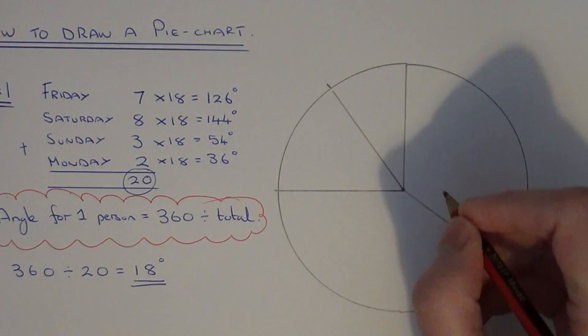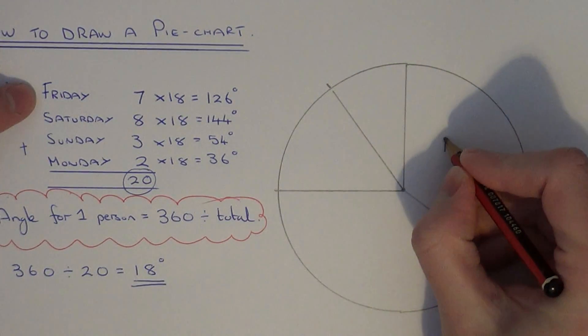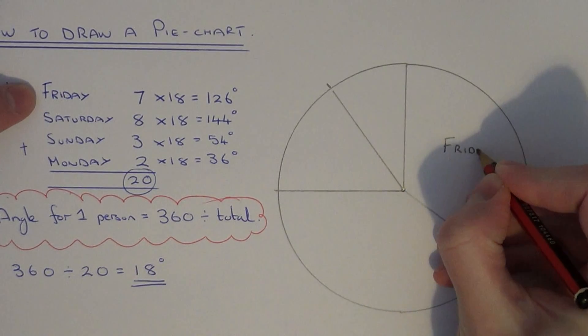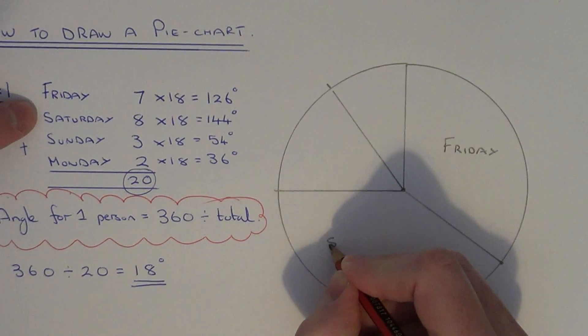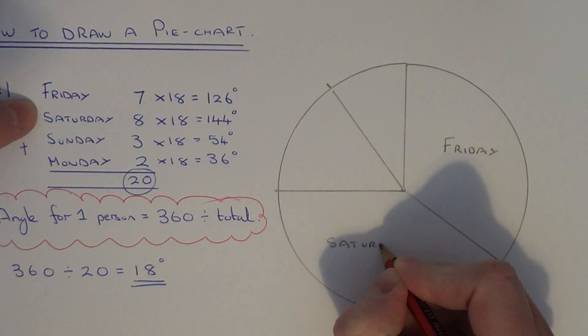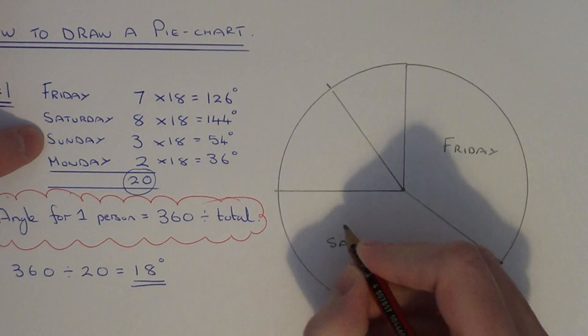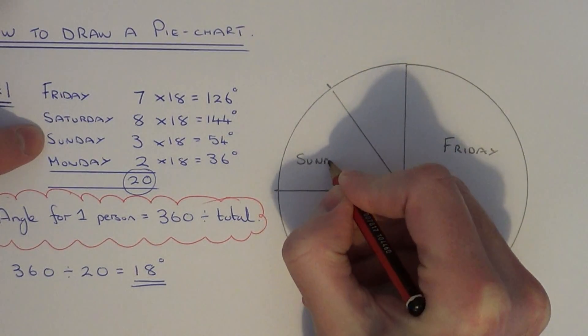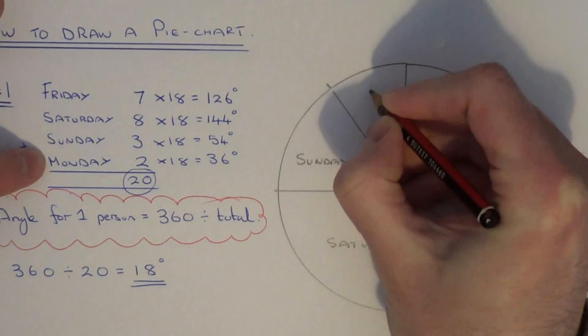And then the final thing is just to label your pie chart. So we've got Friday, Saturday, Sunday, and Monday.